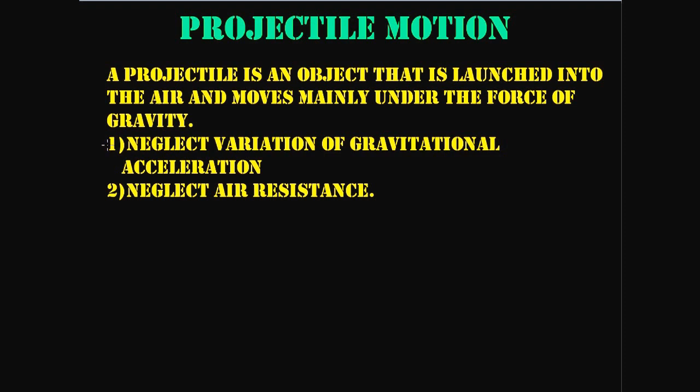So two things we're going to do in these problems: we're going to neglect variation of gravitational acceleration and we're going to neglect air resistance. So the first one, neglect variation of gravitational acceleration - what the heck is that supposed to mean?